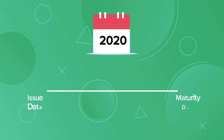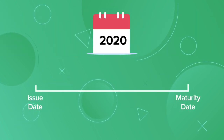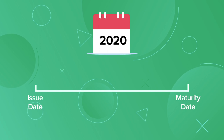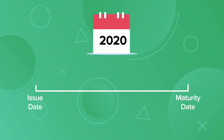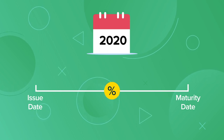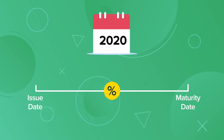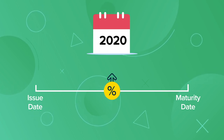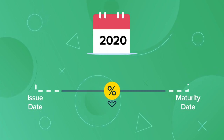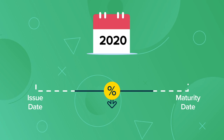Time to maturity is the length of time a bond is issued for. All else being equal, a bond with a longer maturity will also have a higher coupon rate than a shorter term bond.